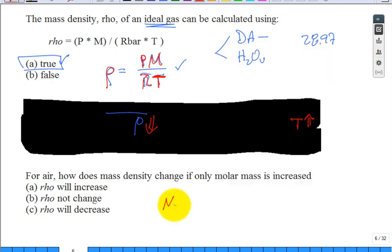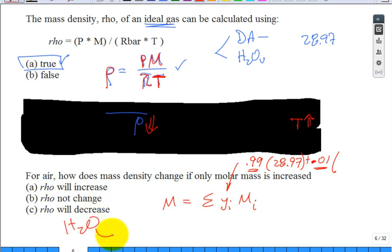It's proportional to the molar mass. The molar mass of the mixture is a sum of the mole fractions times the molar mass of each individual component. Normally we have a very large number, maybe 98%, 0.99 is dry air, and the dry air molar mass is 28.97.